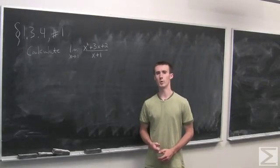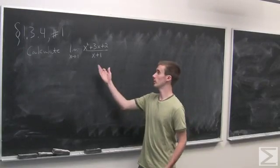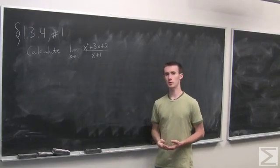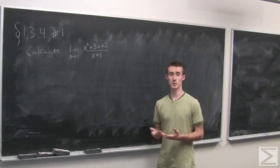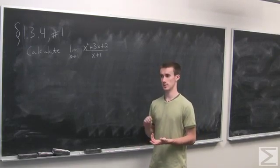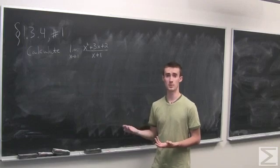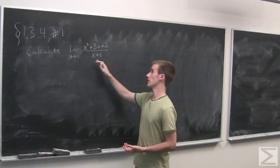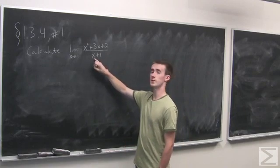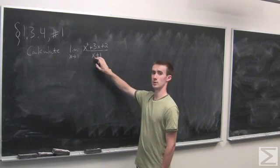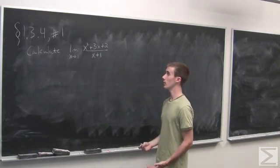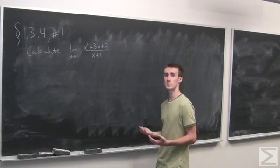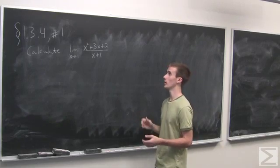For section 1.3.4, problem number 1, we're asked to compute the limit as x approaches 1 of this function here. Now, the idea is with continuous functions, in order to compute a limit, we can just stick in that point if the function is defined at that point. So we see that this is continuous everywhere except for the point x equals minus 1, in which case we end up with a problem dividing by 0, but we're looking at the limit as x approaches 1, which is defined there, and it's continuous in a neighborhood, a little open area around that.